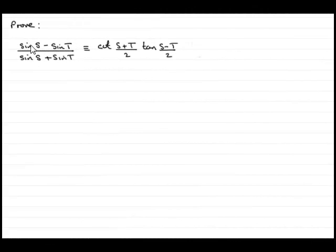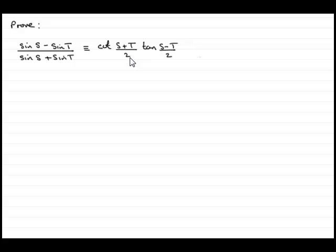Hi. In this example we need to prove that sin s minus sin t, all divided by sin s plus sin t, is identical to cot of s plus t all divided by 2, times the tan of s minus t over 2.